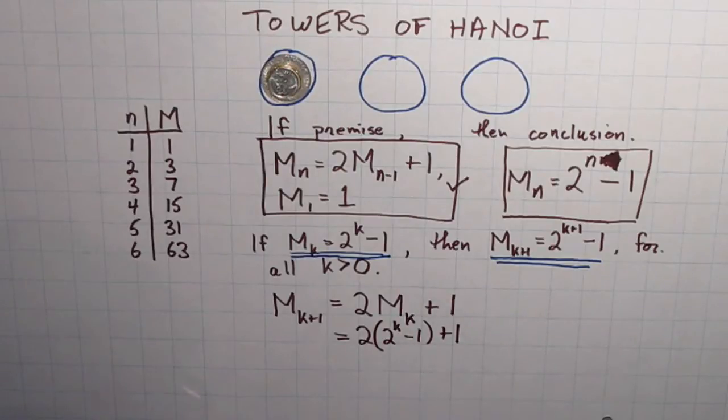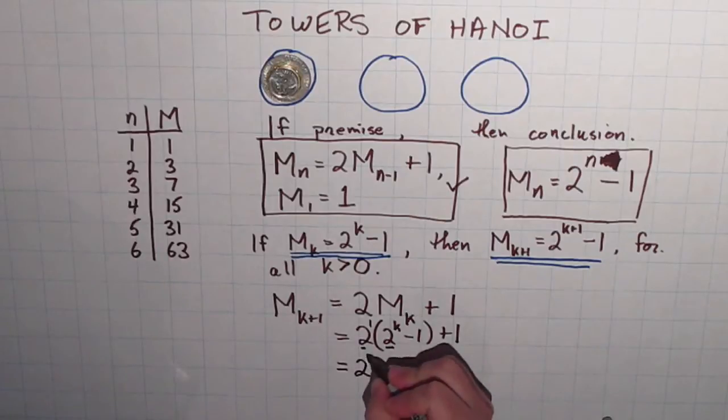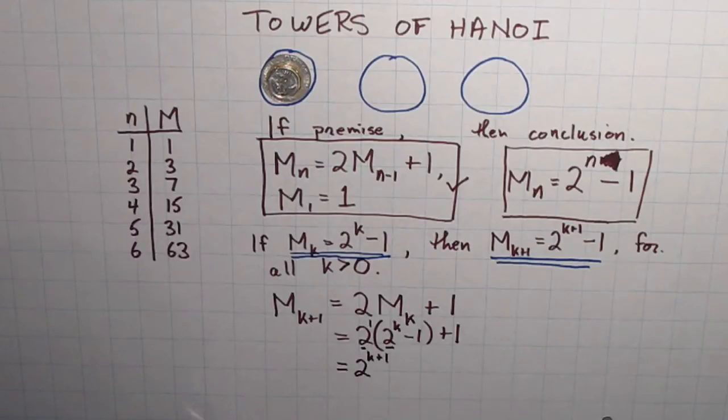And then this falls apart pretty quickly, because if we multiply out the brackets, think of that as a 2 to the 1. I have two powers with the same base, and I have a rule for exponents that says if I multiply two powers with the same base, I can combine them into a single base by adding the exponents. So, 2 to the 1 times 2 to the k is 2 to the k plus 1. Just adding those two exponents together.